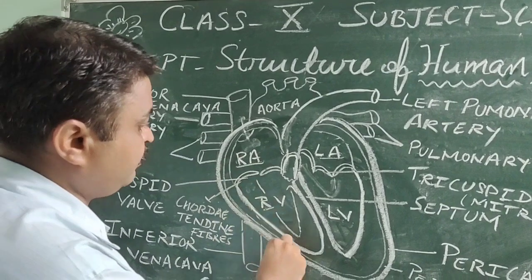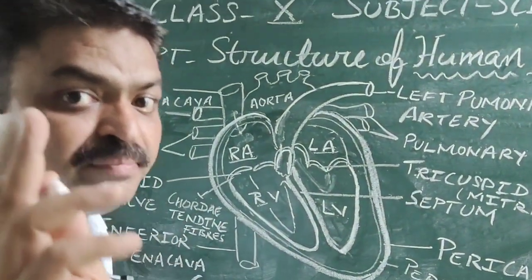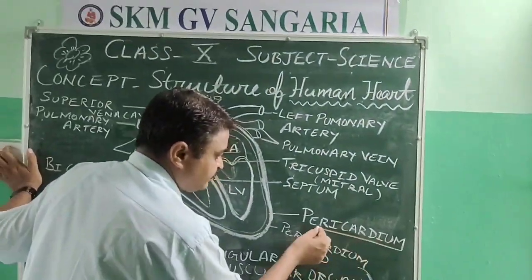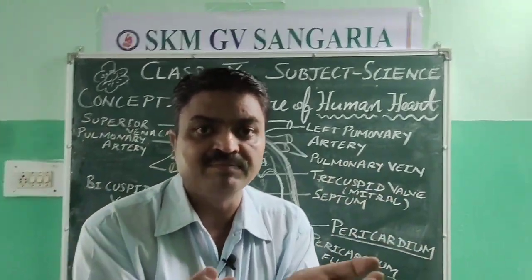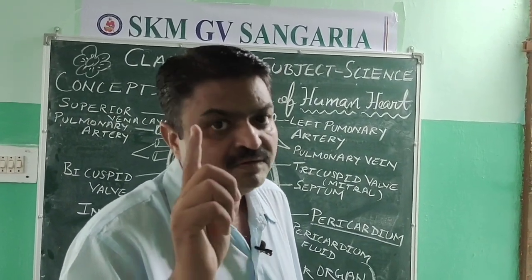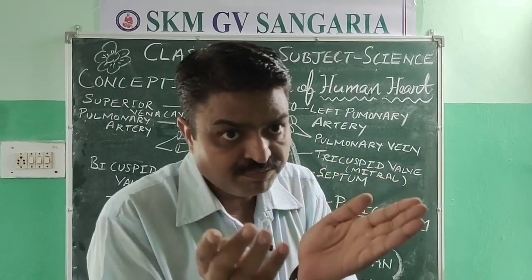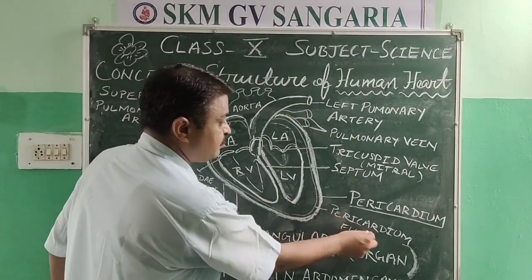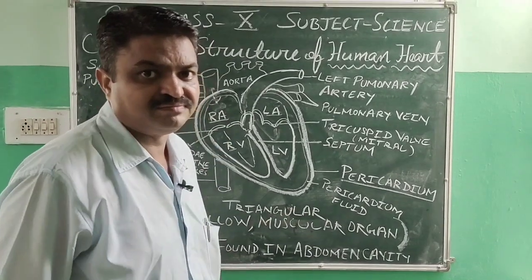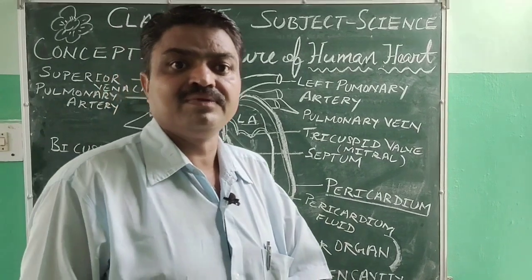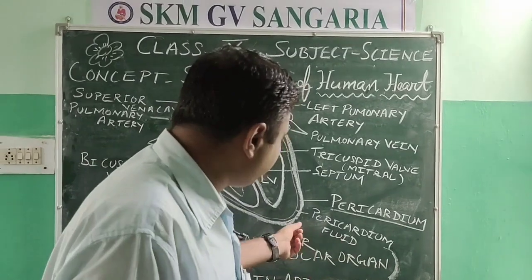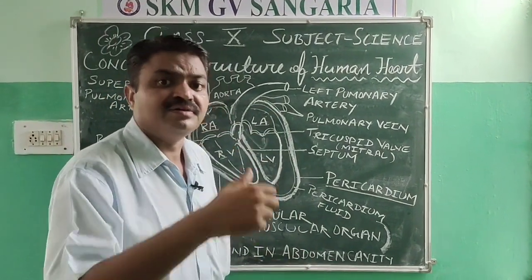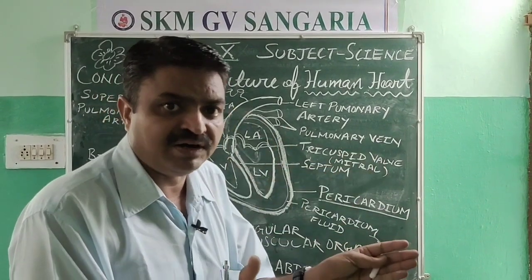Our heart is covered by a membrane, and it is a double membrane. It protects the heart and it is called the pericardium. The pericardium is the covering of the human heart and it has two membranes. In between them there is a fluid known as pericardial fluid. With the help of this fluid, our heart works regularly without any damage — it protects the heart from friction, allowing the heart to contract and relax regularly.